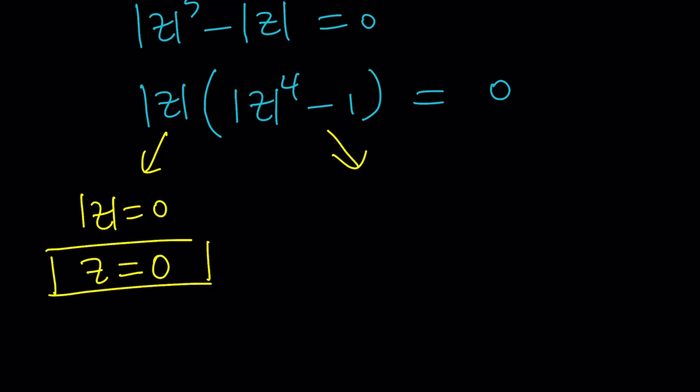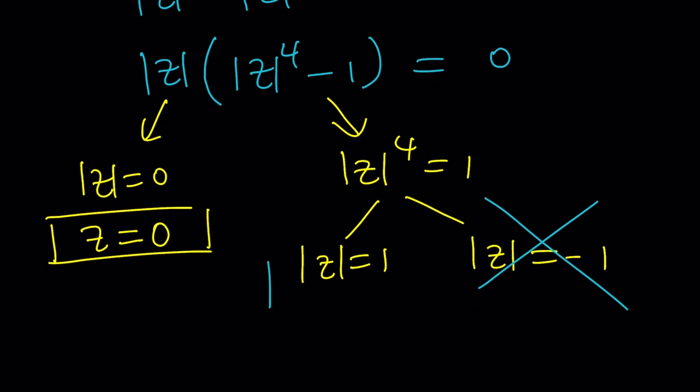What about this one? This means the absolute value of z to the fourth is one, which means the absolute value of z is either one or negative one because four is even, right? But wait a minute. Can absolute value of a number be negative? No. In the real world, no. In the complex world, no way. It can be zero or positive, but it can't be negative. So we're going to discard that and go with this.